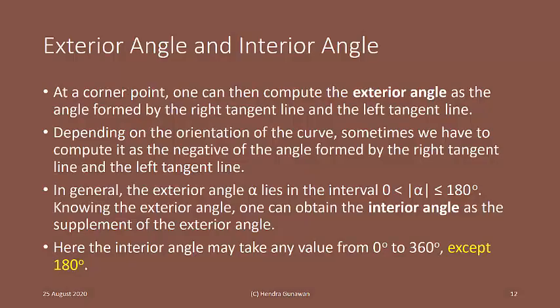At a corner point, one can then compute the exterior angle as the angle formed by the right tangent line and the left tangent line. Depending on the orientation of the curve, sometimes we have to compute it as the negative of the angle formed by the right tangent line and the left tangent line.